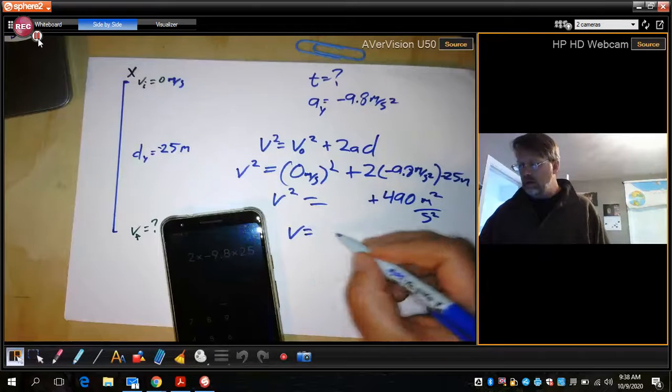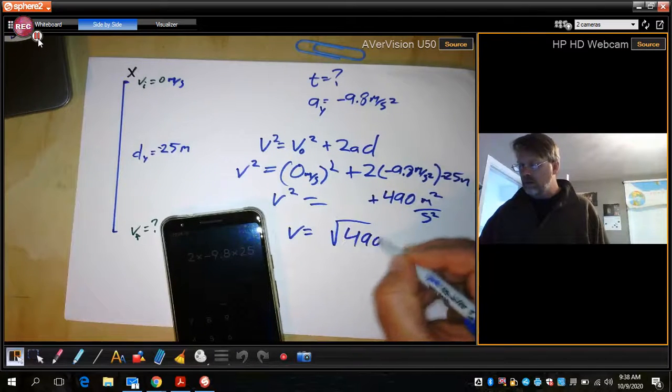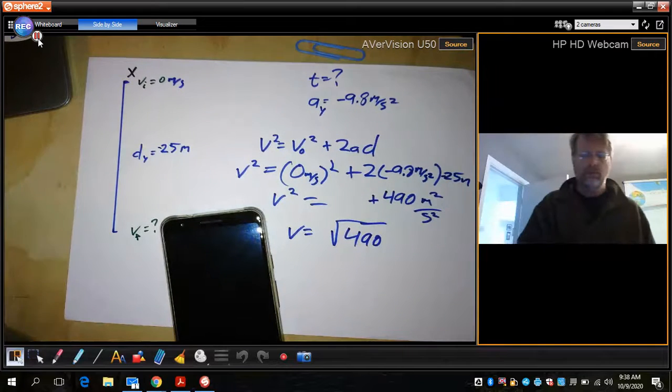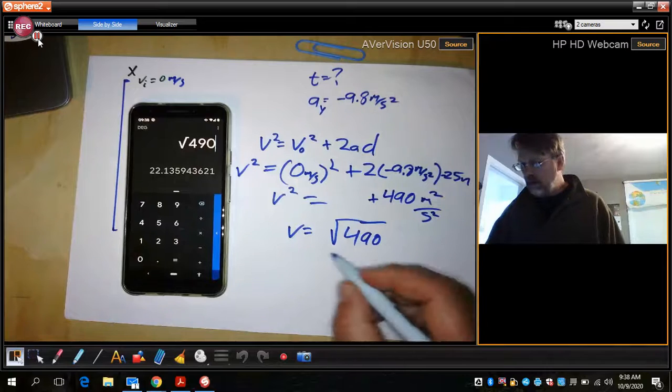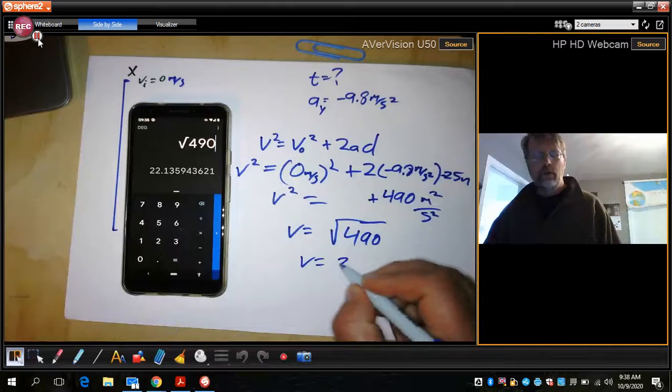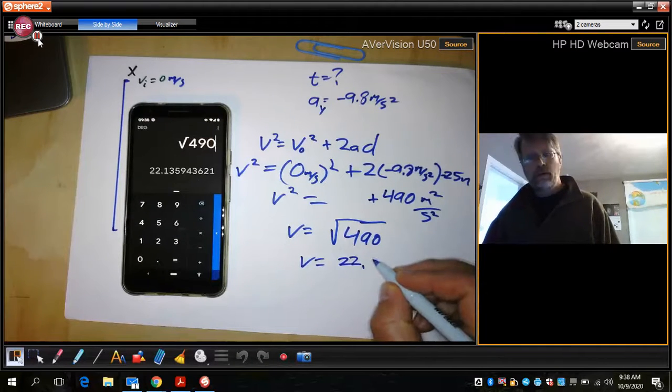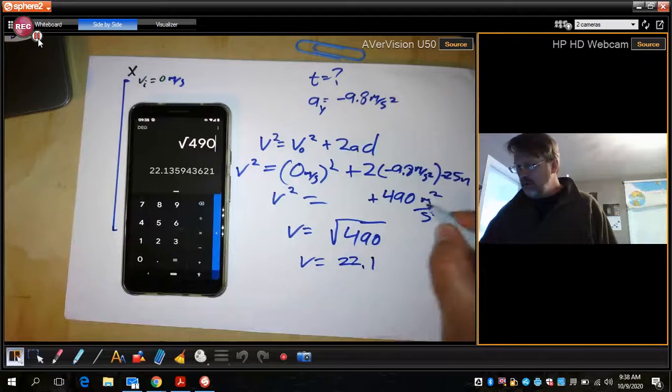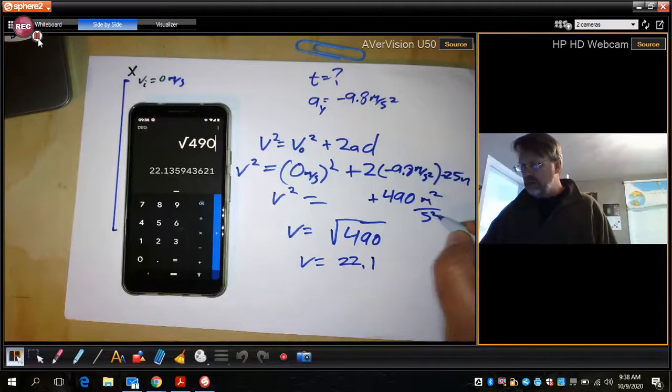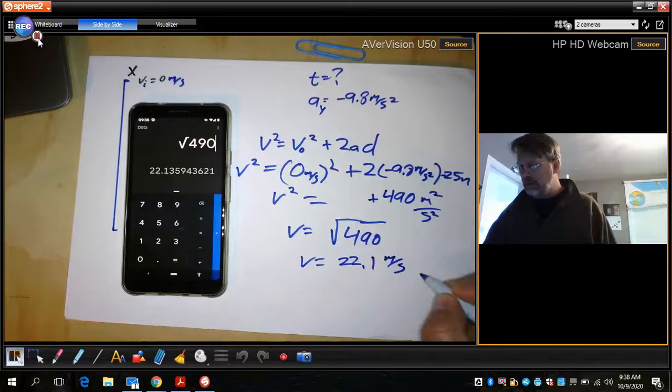So now we can take v equals the square root of 490. So we have the square root of 490. And that is 22.1 meters squared over seconds squared. We square root of that meters per second.